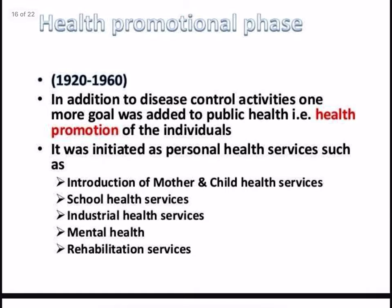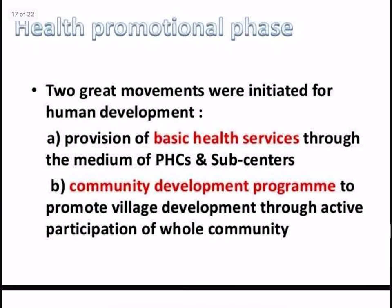The health promotion phase ran from 1920 to 1960. In addition to disease control activities, one more goal was added to public health: health promotion of individuals. It was initiated through personal health services such as mother and child health services, school health services, industrial health services, mental health, and rehabilitation services. Two great movements were initiated for human development: the provision of basic health services through primary health care centers and sub-centers, and the community development program to promote village development through active participation of the whole community.